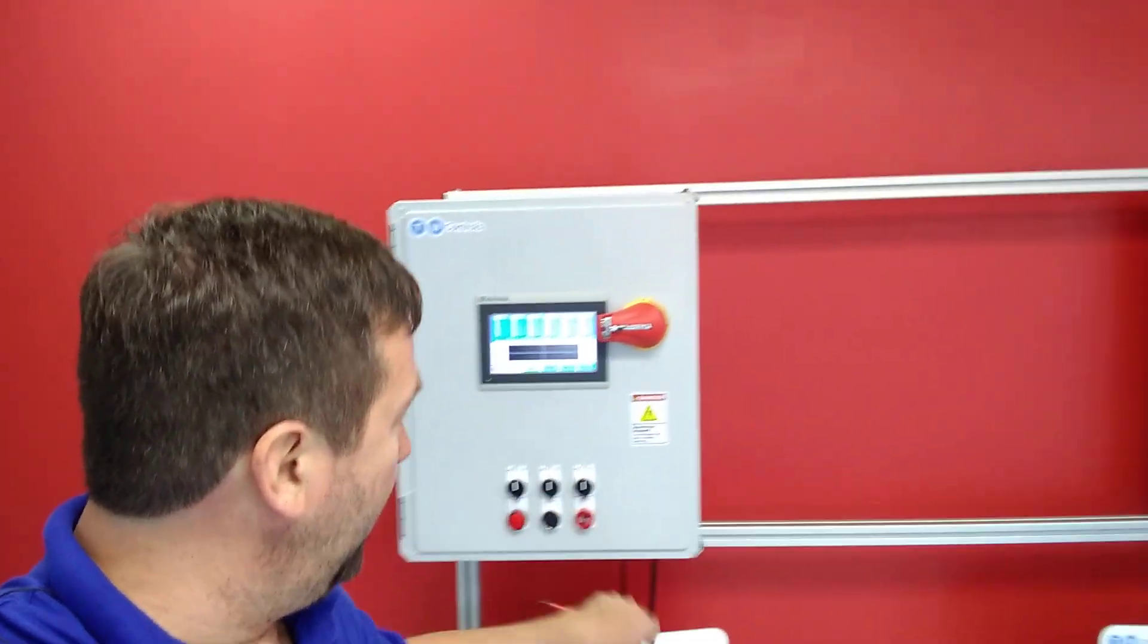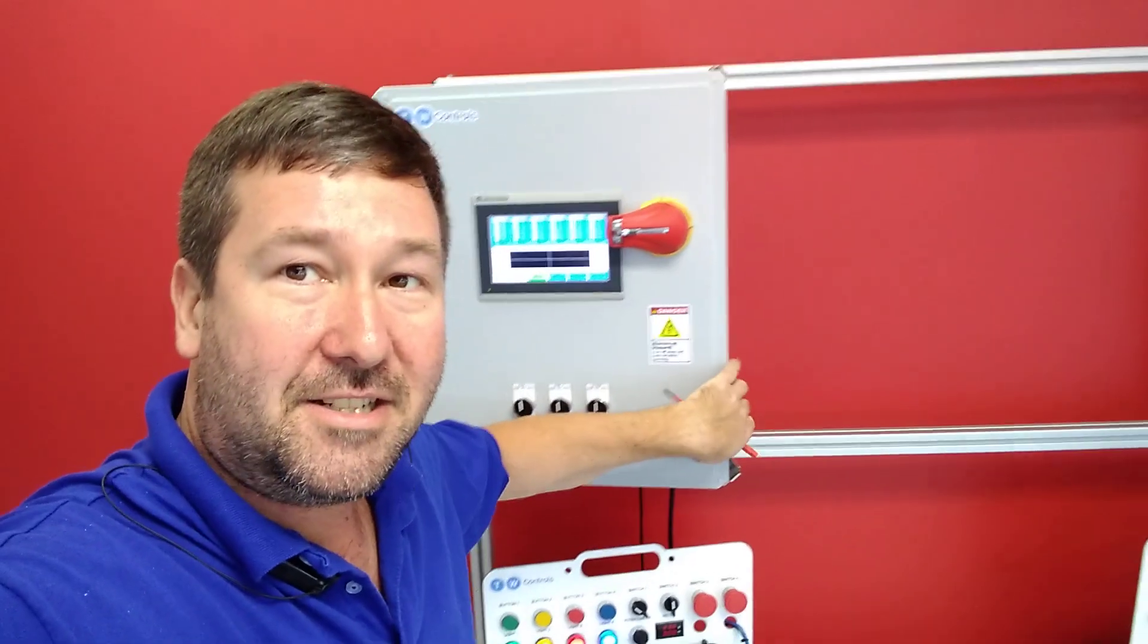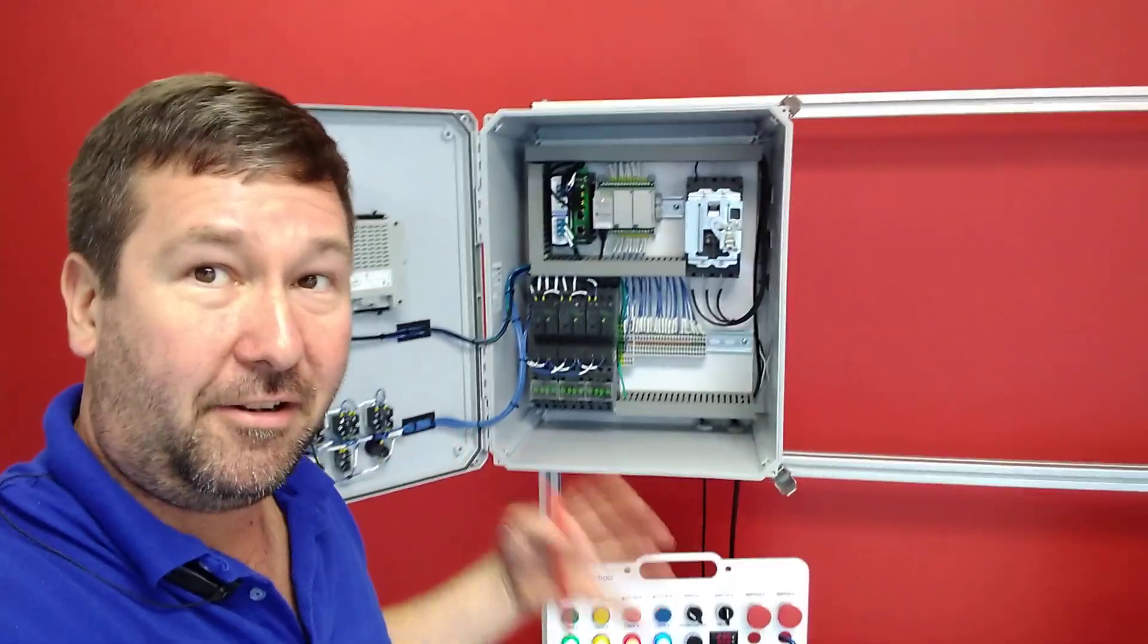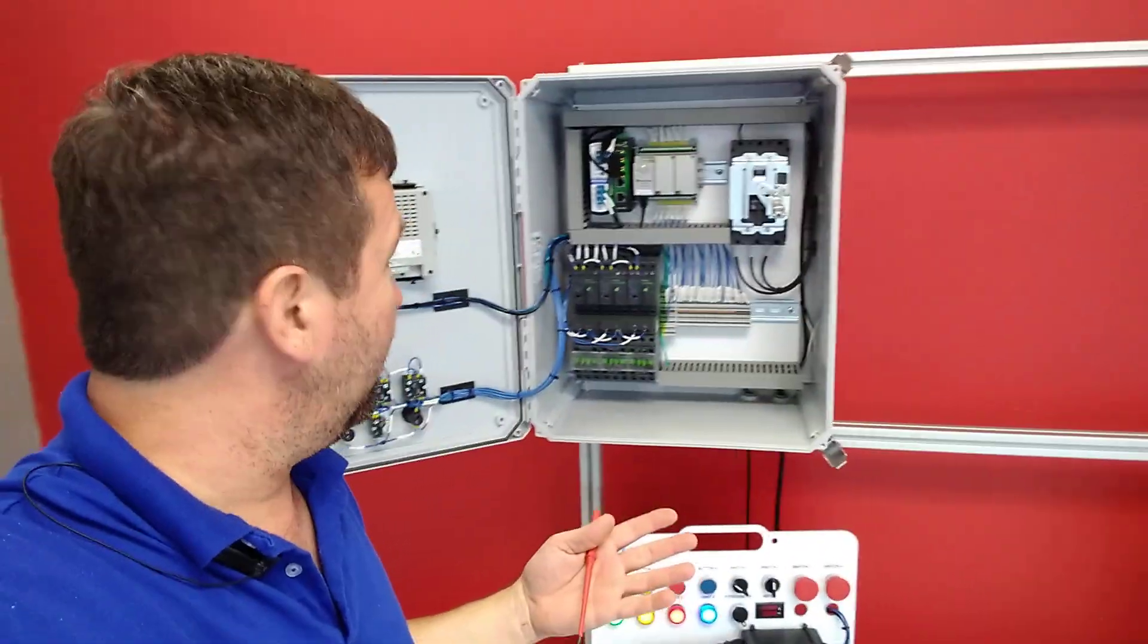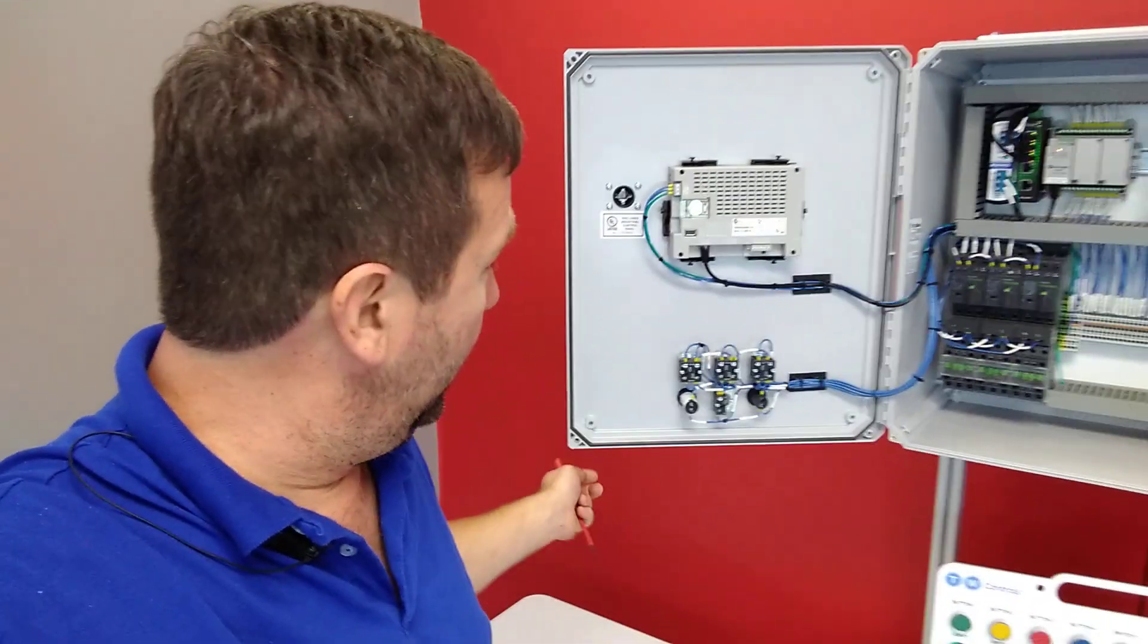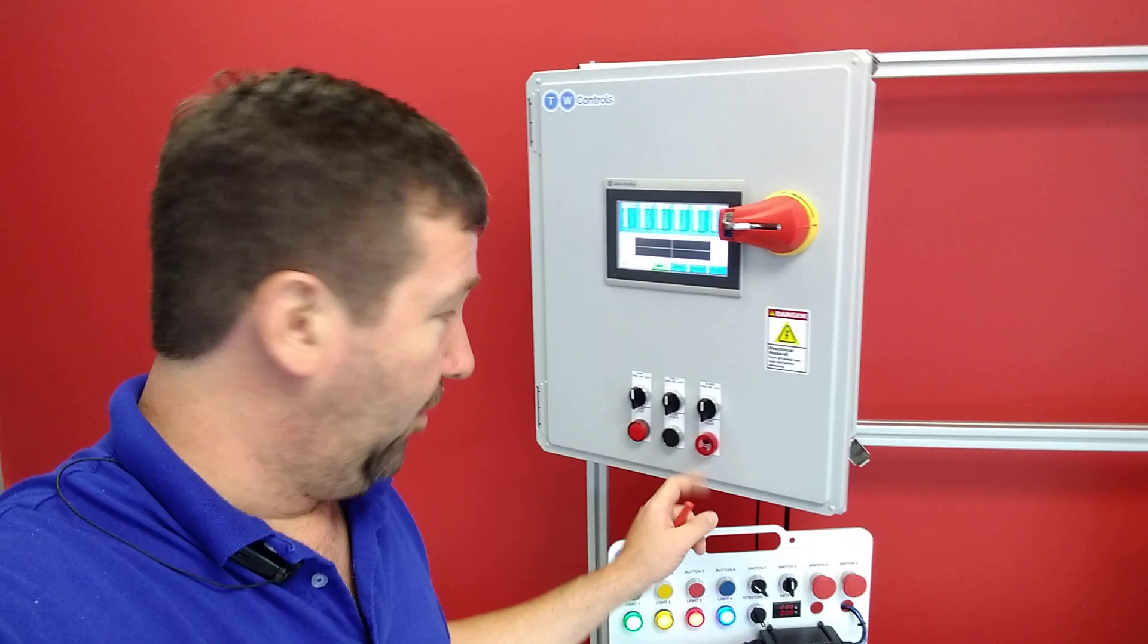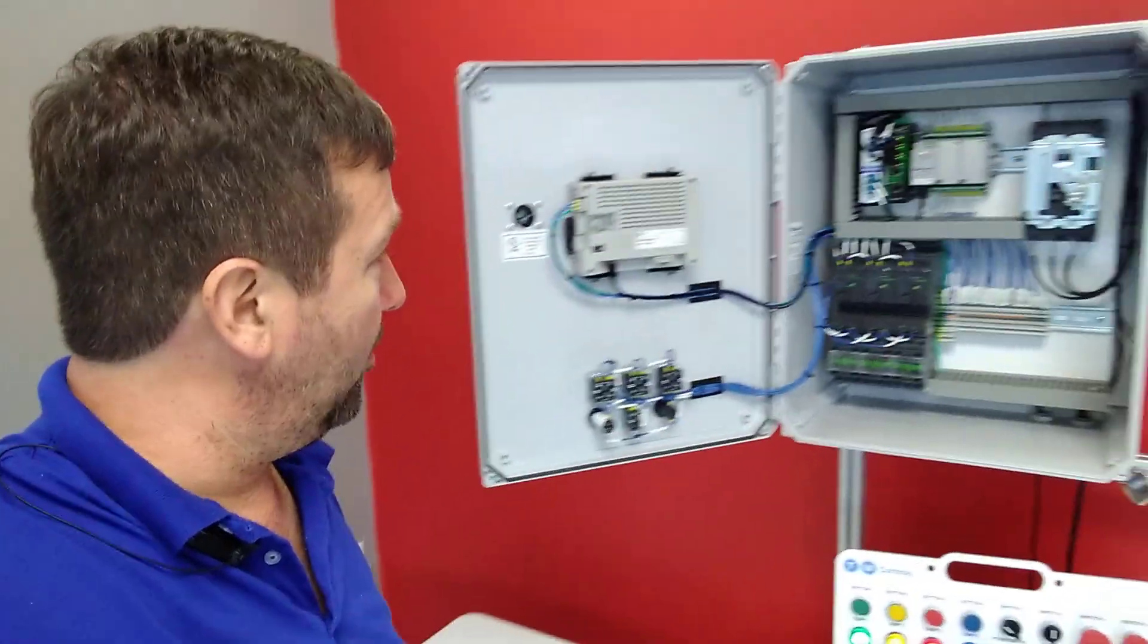And then we have this control panel. This is actually one of our standard control panels, and it has just enough to show off exactly what is in a panel without it being ridiculously large. It has an HMI on the front of it. We have some hardwired hand-off-auto selector, an alarm, and an alarm buzzer. That's kind of our interface.